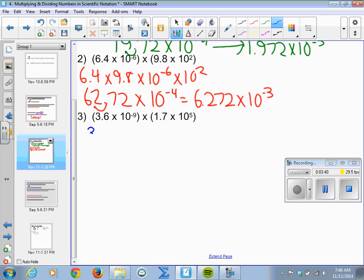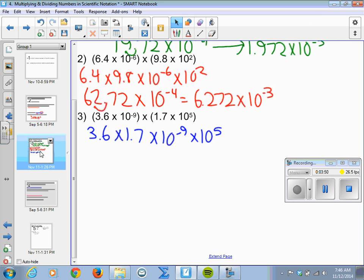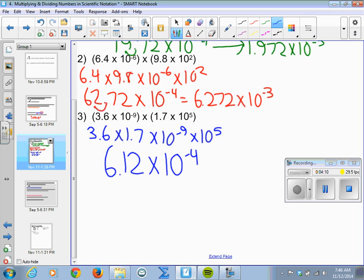Finally, rearrange it: 3.6 times 1.7 times 10 to the negative 9th times 10 to the 5th. And eventually you guys are going to have to write this out this way. You can just see it and know which numbers you're going to multiply together. But for now, I think it's good to reorder so we can visualize it. So the first part turns into 6.12, and we have 10 to the negative 4th. And no reason to change that one. We are all set.